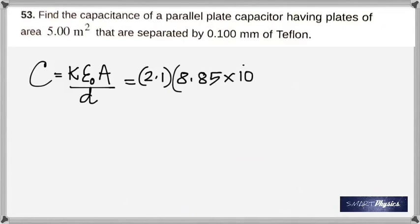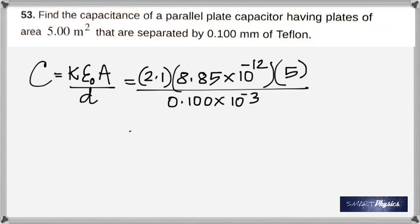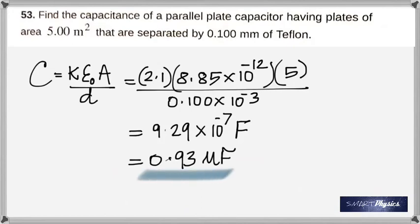Epsilon naught is the permittivity of free space, that's a constant. Area is 5, distance is in millimeters - you've got to have it in meters, so times 10 to the negative 3. Straightforward - all you've got to do is calculate that carefully. You would get it as 9.29 times 10 to the negative 7 Farad, which is 0.929 or 0.93 times 10 to the negative 6. Therefore, you write it as microfarad because 10 to the negative 6 is 1 microfarad.